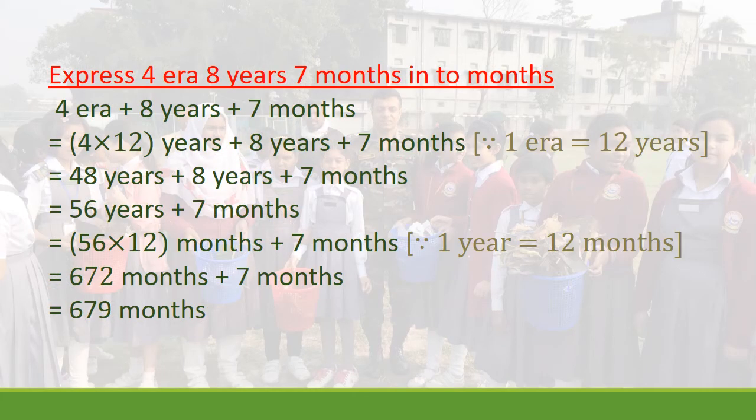Next problem: express 4 years, 8 years, 7 months into months. So we write: 4 years multiplied by 12, because 1 year equals 12 months. That gives years: 4 multiply 12, plus 8 years, plus 7 months.